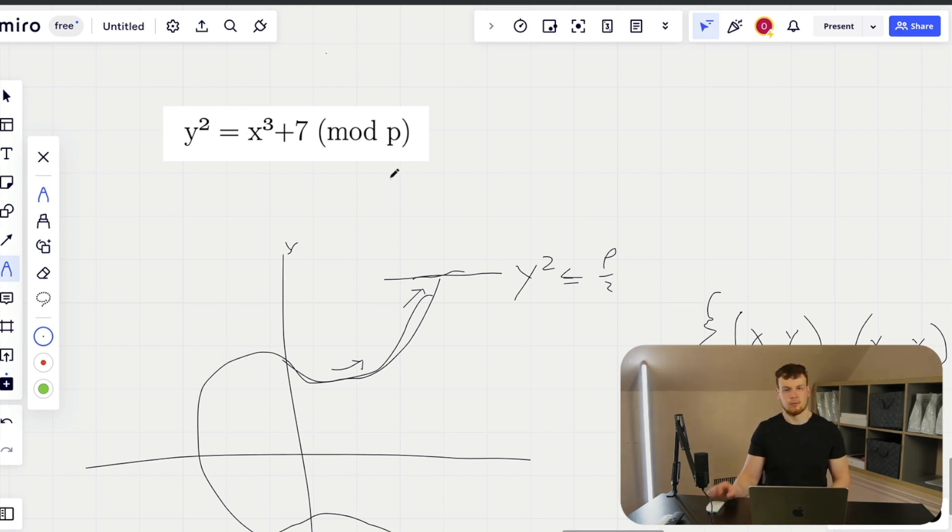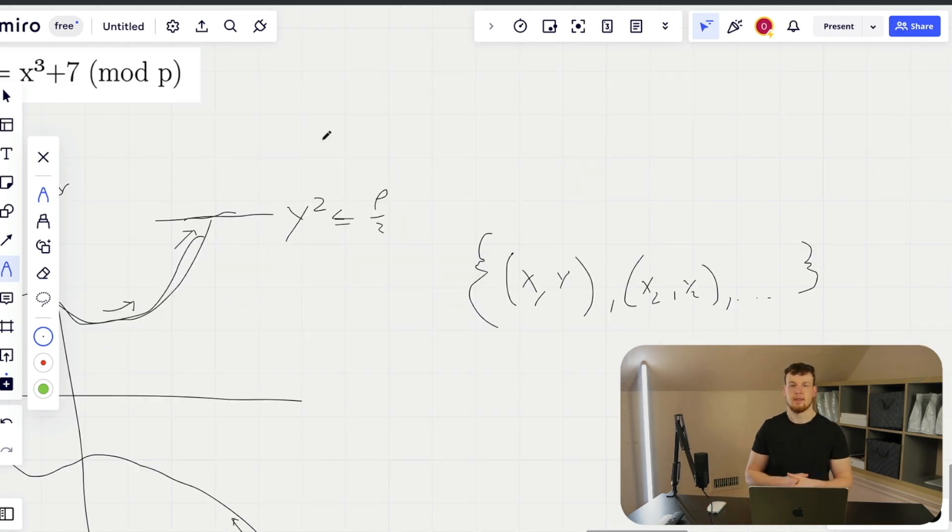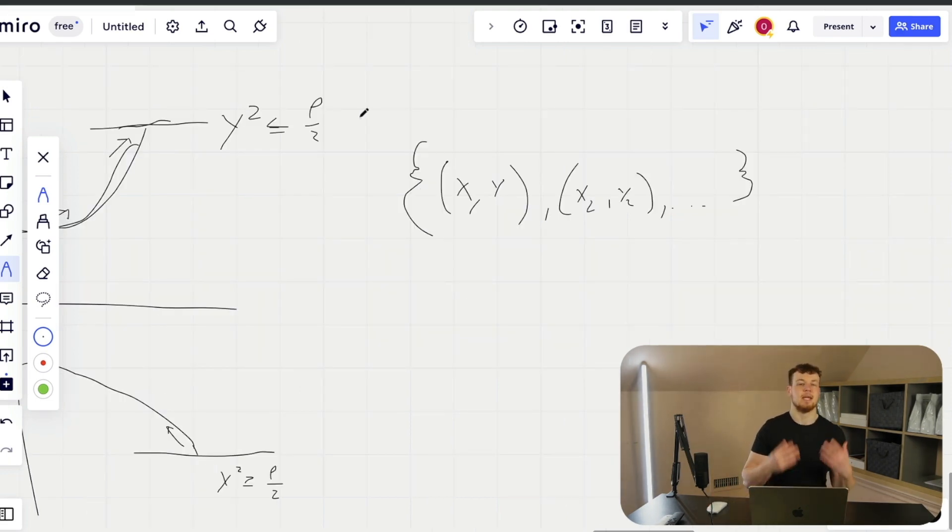And you can see that these are going to be integers modulo p. So for the group theorists out there, all of these coordinates are going to be inside the field Zp. And it's important to note that the size of this group, or n, is actually prime. I'm not going to go into how n has been calculated by some very smart people because frankly it's above my knowledge and we don't have time for that in this particular video.